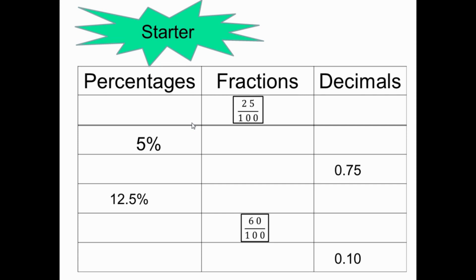If we have 25 over 100 as a fraction, the percentage is 25%. And as a decimal, we look at how many zeros - we move the point. Since there are two zeros, we move the point two times, giving us 0.25 as the decimal.